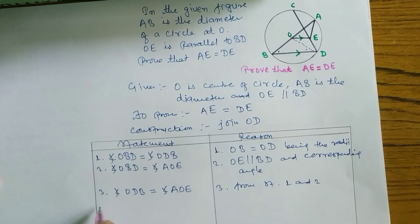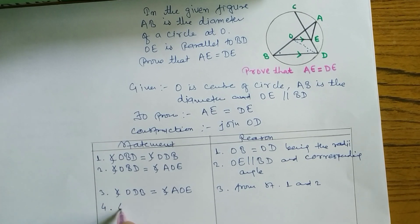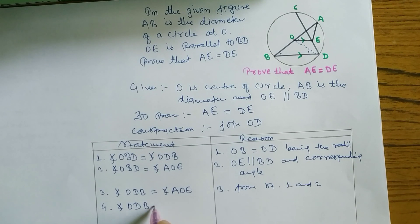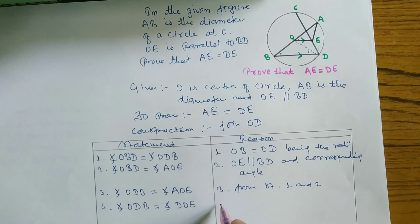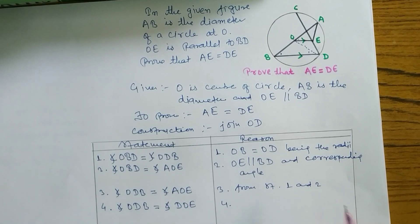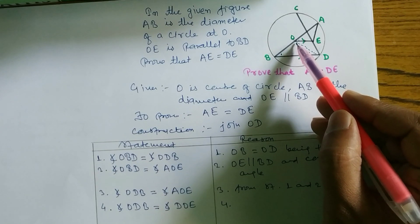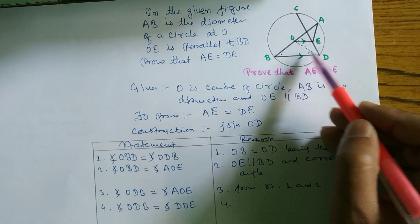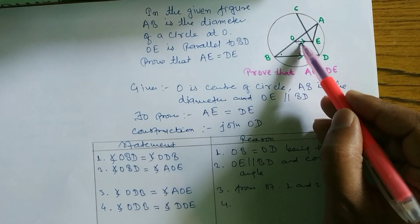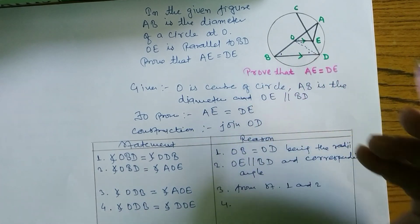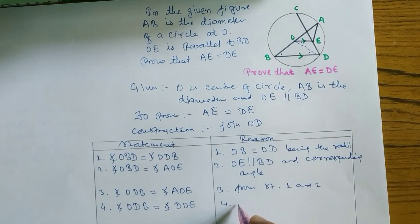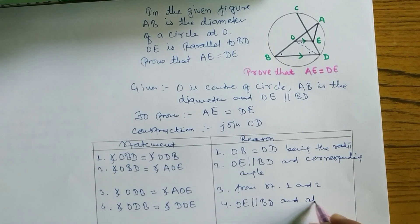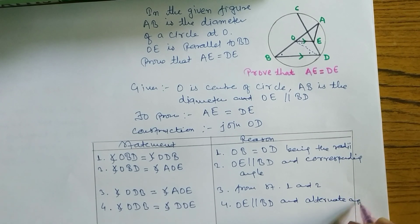Statement 4: Angle ODB is equal to angle DOE. The reason is alternate angles, because OE and BD are parallel. OE parallel BD, alternate angles.